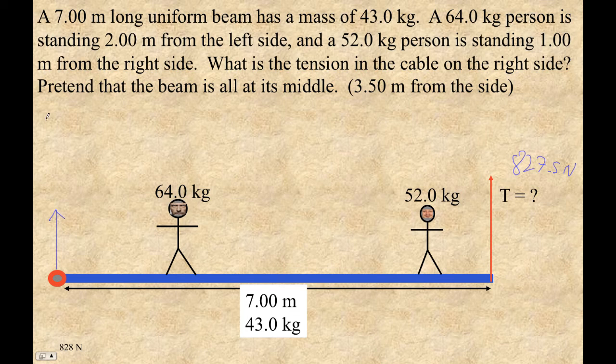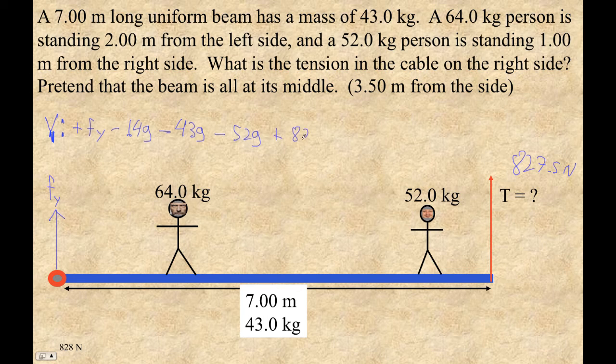Acting there, and so the question is, what is that upward force? Well, we can figure it out. We can set up a y expression. So I'll just call this f in the y direction, Fy, not fyi, but fyi. So the force is up. We've got positive Fy. This is just, remember, this is just a translational equilibrium, so we don't care where it acts. Minus 64 g, minus 43 g, minus 52 g, plus 827.5 is zero.